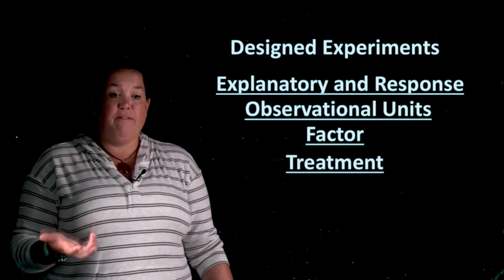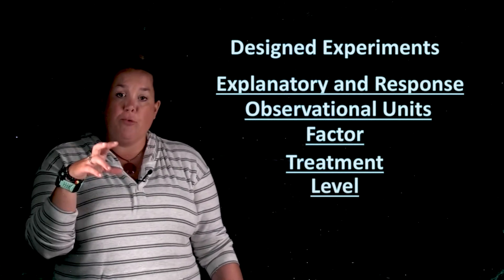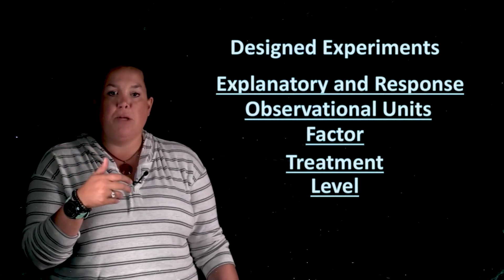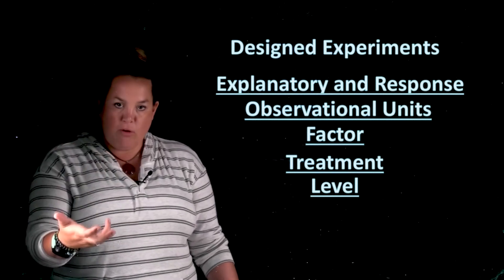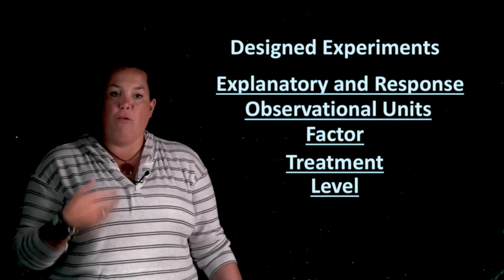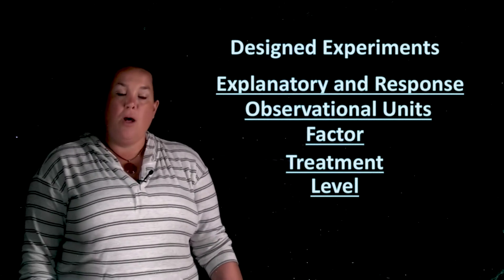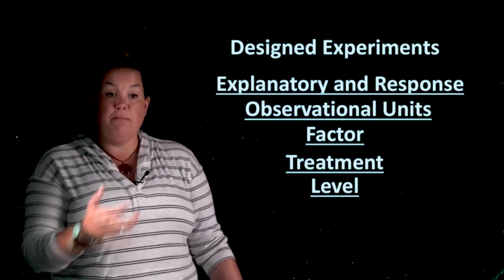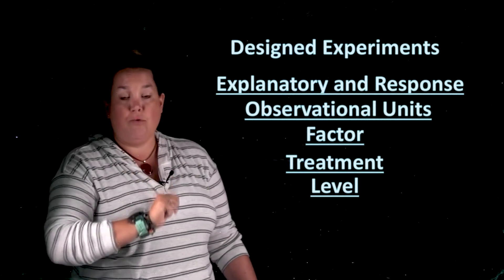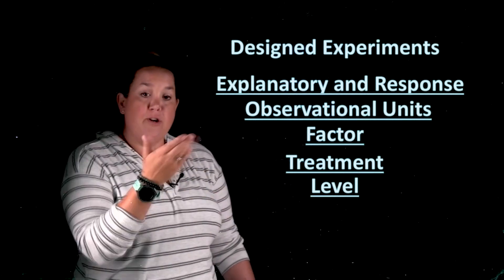So within the factor, you will have multiple levels. So you can have multiple things that you're assigning people to. For example, if you were assigning people to different water levels, the amount of water being consumed might affect how well people sleep. And so my explanatory variable is water consumption. The response is how well people sleep. In that, the different levels might be 32 ounces a day, 64 ounces a day, 96 ounces a day. That would be the different levels that you're assigning people to.